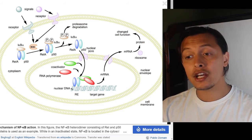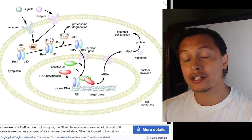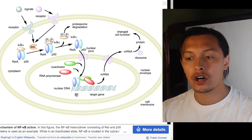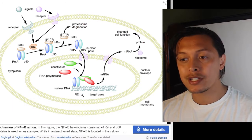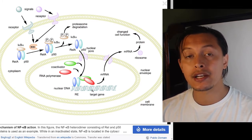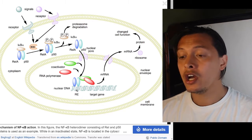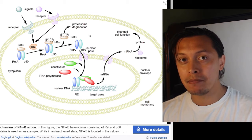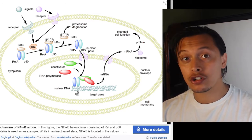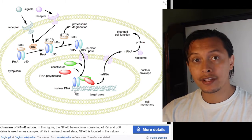Now that the NF-kappa B complex is free, it goes through nuclear pores where it interacts with DNA. This interaction recruits coactivators and RNA polymerase, which transcribes the DNA. It looks for response element sequences on the DNA and then activates transcription of whatever target gene is next to that regulatory element. You can have multiple regulatory elements in your DNA.